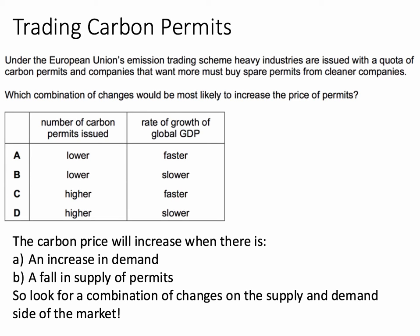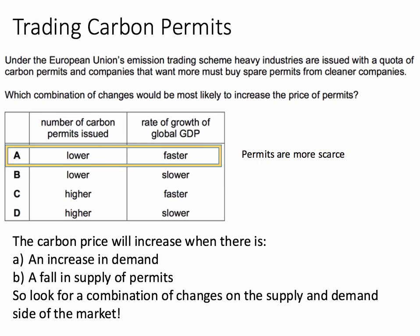Think about the price mechanism here — think about the way in which the carbon price is established. The market price will increase when there is an increase in demand for permits and/or a fall in supply. So we're looking for a combination A, B, C, or D where there's either a fall in supply and an increase in demand. The answer is A. If you lower the number of carbon permits issued, permits become more scarce — essentially you're cutting the supply of permits in the market. Imagine the supply curve for permits shifting to the left.